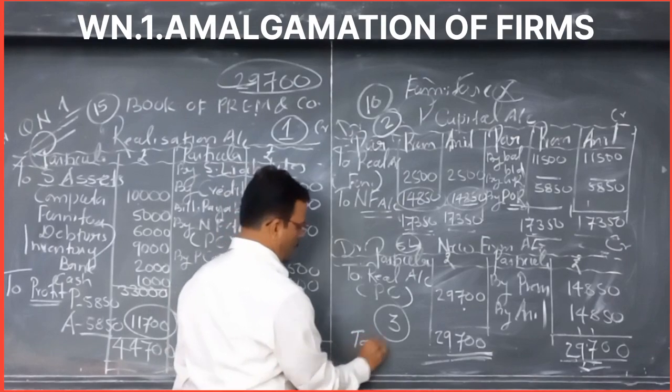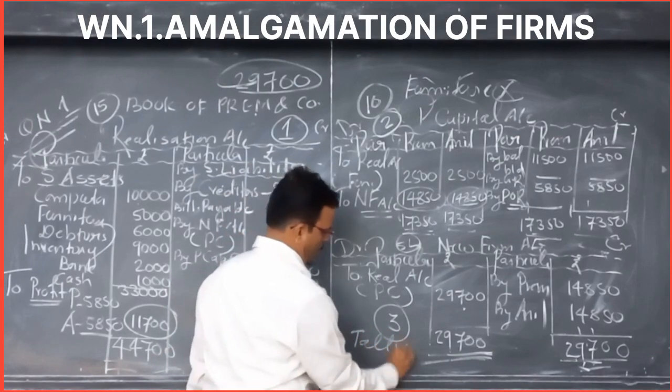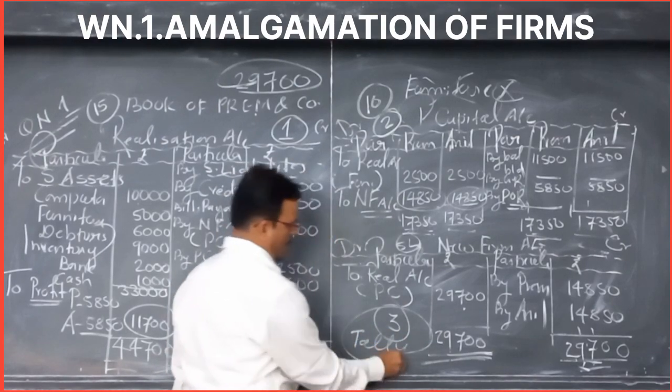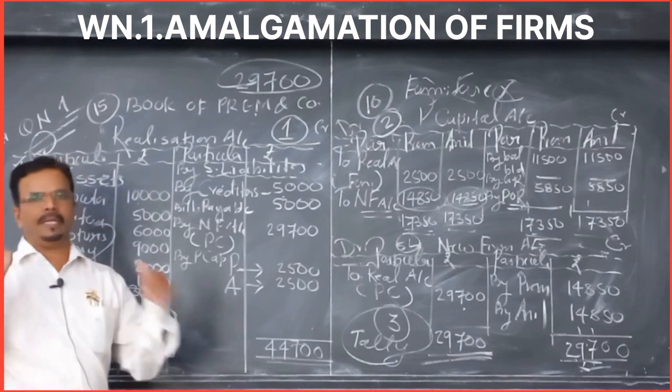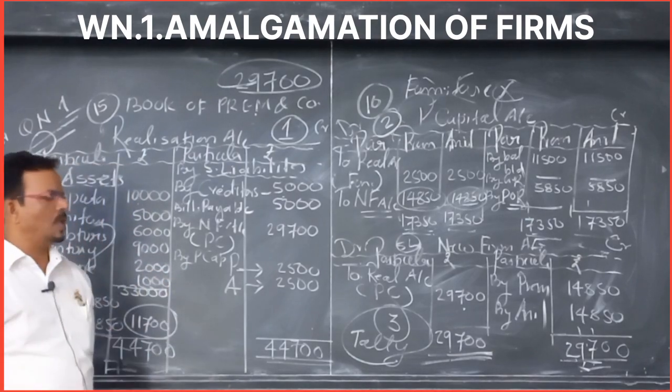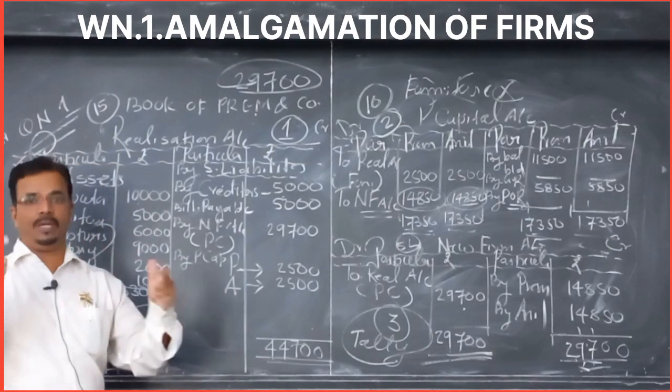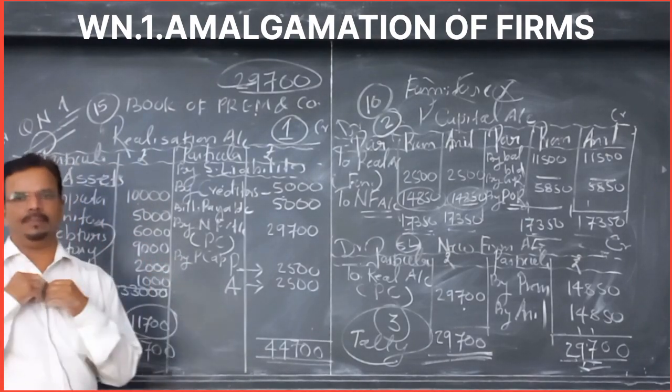The new firm account always gets tallied. Total of 14,850 plus 14,850 equals 29,700, which matches the PEC of 29,700 — so the new firm account is tallied. Practice this sum. All the best for your exam.